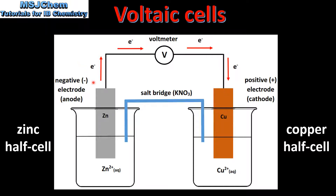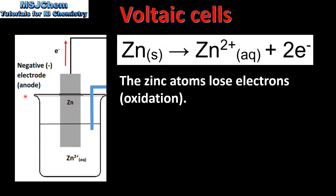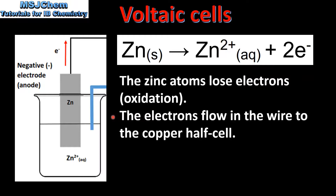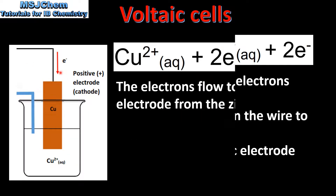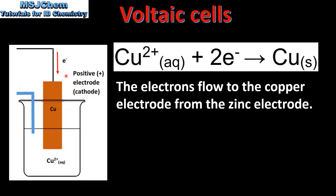Next we'll have a look at each half cell in more detail. Let's start by looking at the negative electrode, which is the anode. At the anode, the Zinc atoms lose electrons to form Zinc 2+ ions, which is oxidation. The electrons then flow in the wire to the Copper half cell, and the mass of the Zinc electrode decreases as Zinc atoms are oxidized to form Zinc 2+ ions.